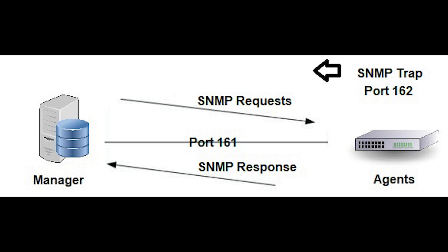SNMP uses port 161, but also uses port 162 when agents send unsolicited traps to the SNMP manager. Traps are used when the device needs to alert the network management software about an event without being polled.